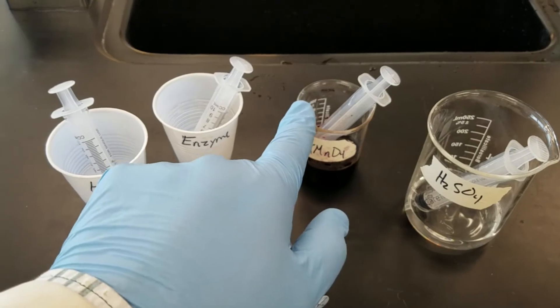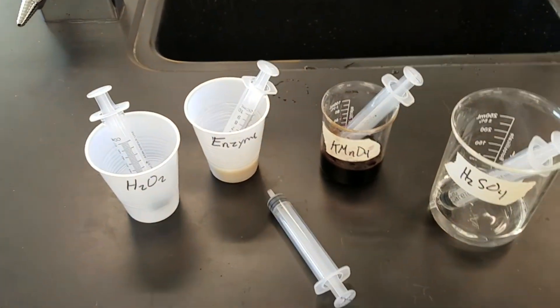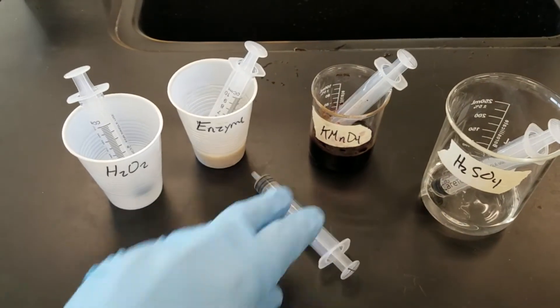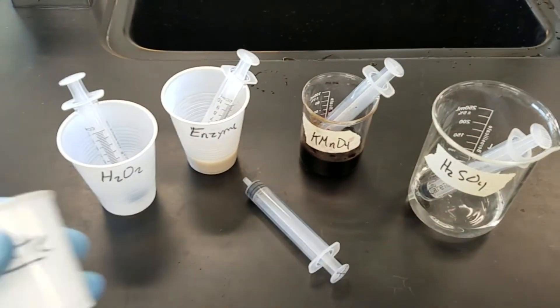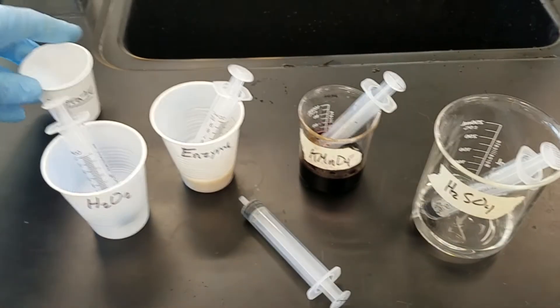Each one of these has a syringe and I'd like you to please leave them in there because we don't want to cross contaminate. There is a fifth syringe by itself with a little X on it. This one you're going to use later with your titrate cup. This titrate cup we'll just keep to the side for right now.